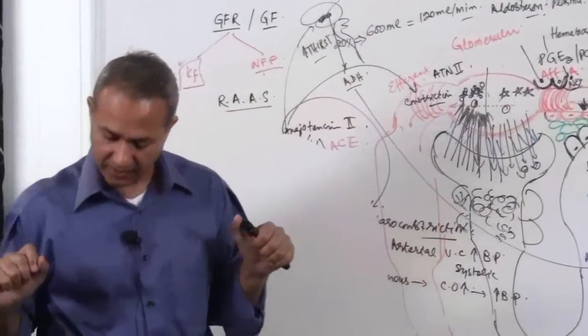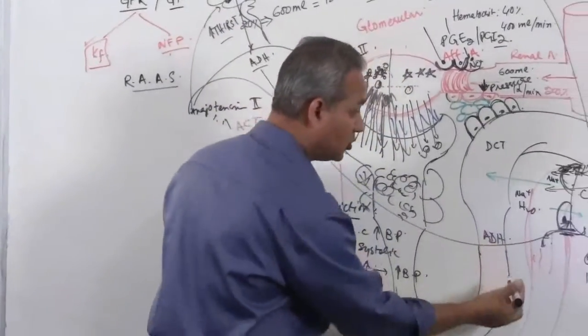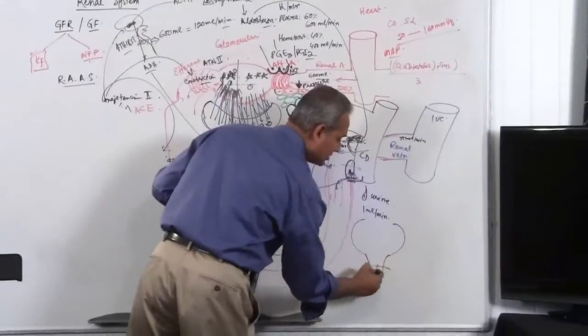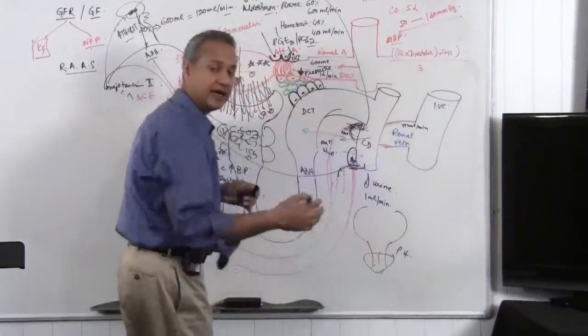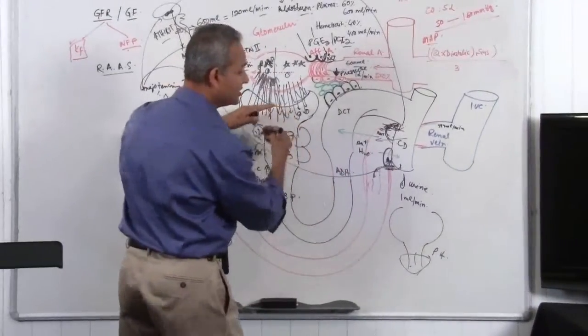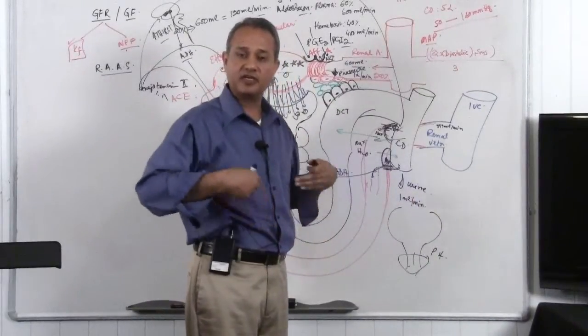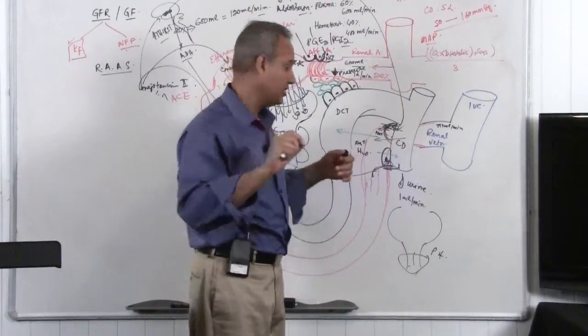Then post-renal azotemia. Post-renal azotemia, something kidney stones or bladder, hyperplasia, prostatic hyperplasia causes it. At the end of the day, post-renal azotemia means there is a reduction in GFR because of the reasons outside the kidney and after the kidney. So what is after the kidney? Ureters, bladder, urethra, prostate.